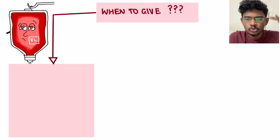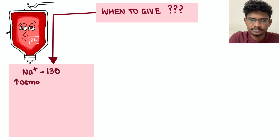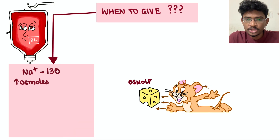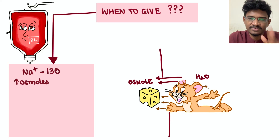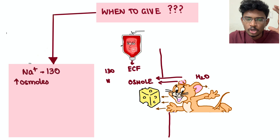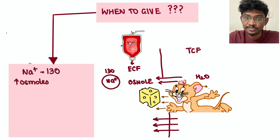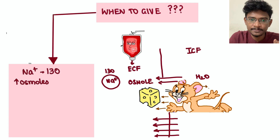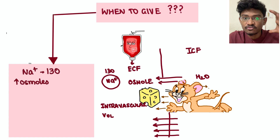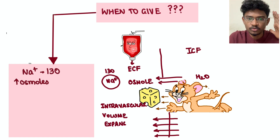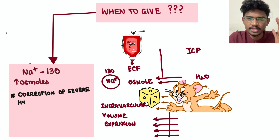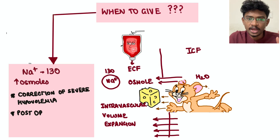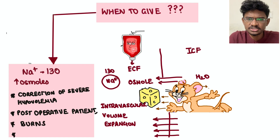Understanding RL's uses from its composition: it contains sodium, which when introduced into the circulation acts as osmoles (cheese) that drag water from the intracellular compartment, expanding the extracellular fluid volume. So RL is the best fluid for volume expansion — it is the fluid of choice in hypovolemic shock, post-operative patients, and burns where hypovolemia is occurring.